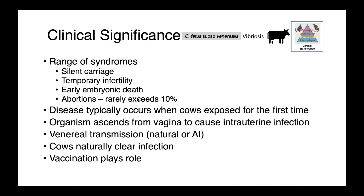We're going to start off talking about Campylobacter fetus subspecies venerealis. The colloquial name of the disease caused by this organism in cattle is vibriosis — a historical designation, since some Campylobacter organisms have a comma-shaped appearance reminiscent of Vibrio species. It causes a range of syndromes varying from silent carriage to temporary infertility, early embryonic death, and even abortions, although these rarely exceed 10% at a herd level. Clinical manifestations typically occur when cows are exposed for the first time. The organism ascends from the vagina, producing an intrauterine infection.